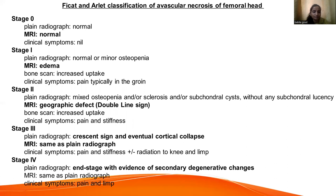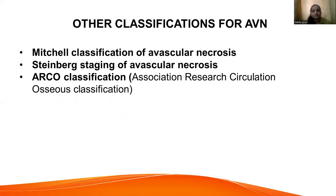Stage 4 — plain radiograph shows end-stage with evidence of secondary degenerative changes; MRI shows the same as plain radiograph; clinical symptoms include pain and limb involvement. Other classifications for AVN include Mitchell's classification, Steinberg staging, and the ARCO classification — that is, the Association Research Circulation Osseous classification.